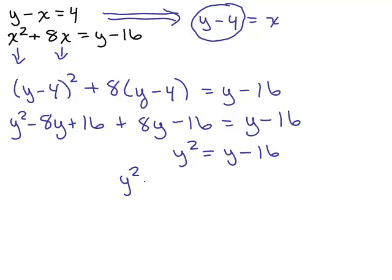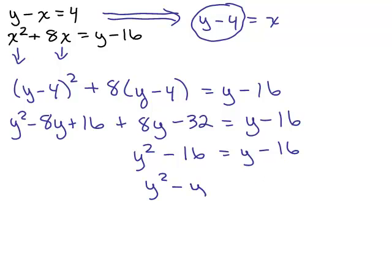And again, I get a quadratic. Is that right? Oops, I made a mistake. I just saw this is supposed to be minus 32. That's another thing. More mistakes to make, the more algebraic. If you have more problems like this, there's just more places to make mistakes. So let's see. I get Y squared, and that's minus 16, equals Y minus 16. And so I still have a quadratic, but I end up with just Y squared minus Y equals 0.